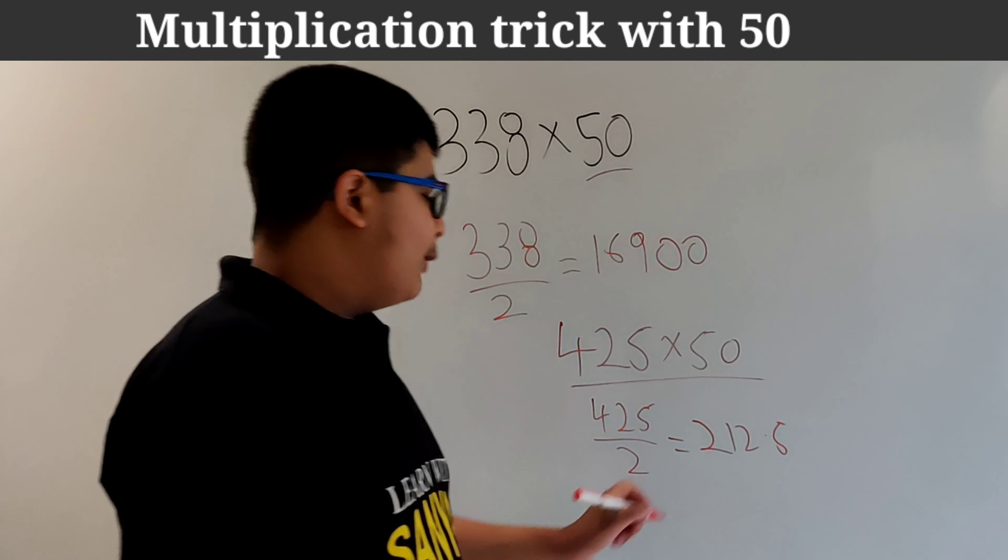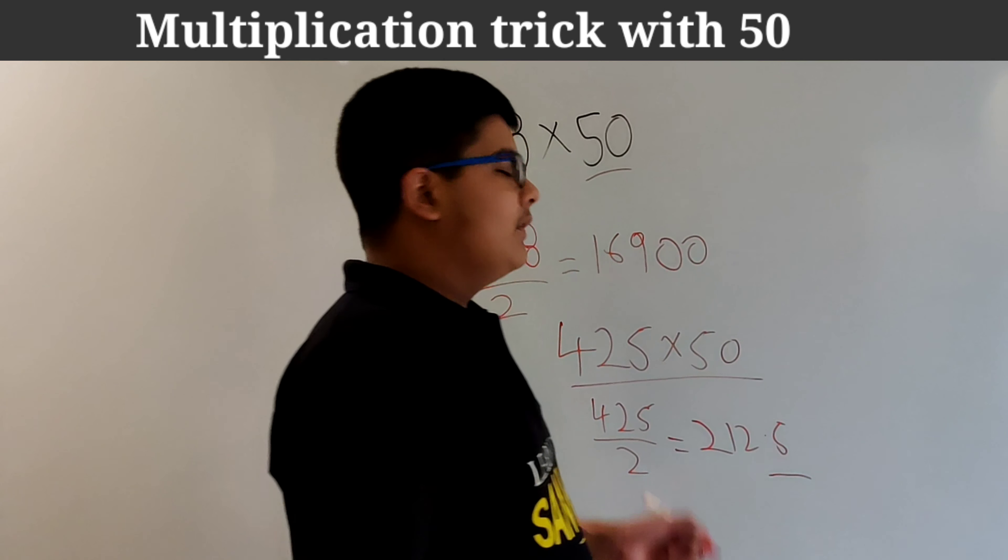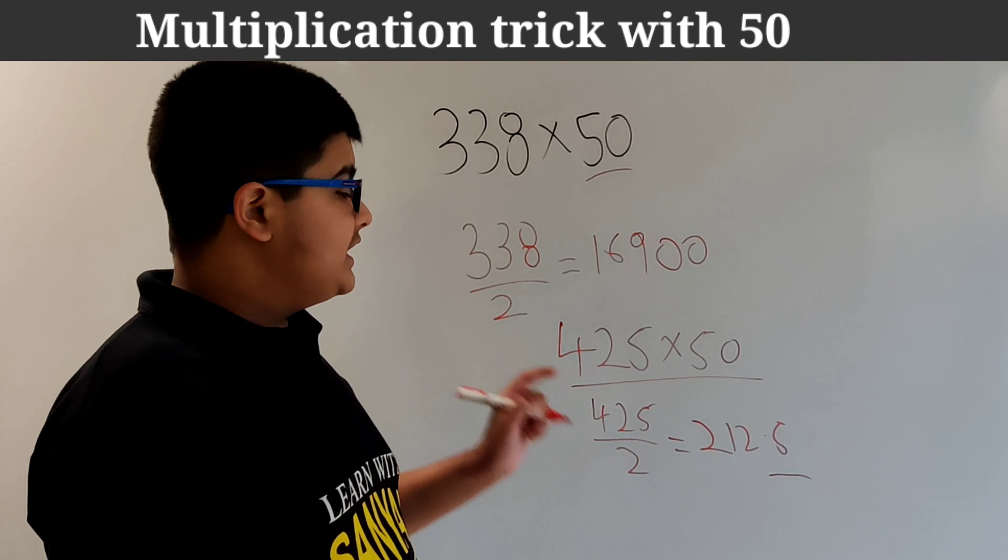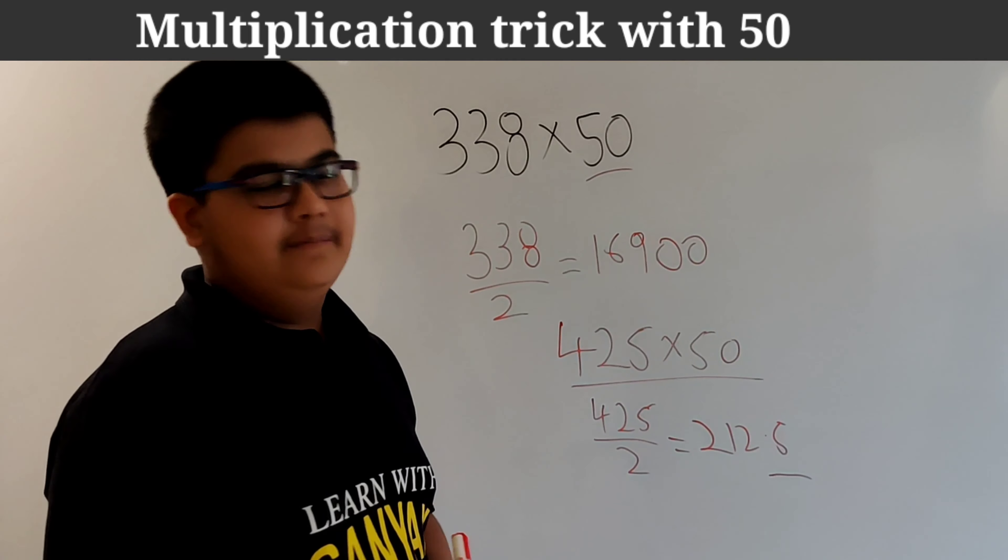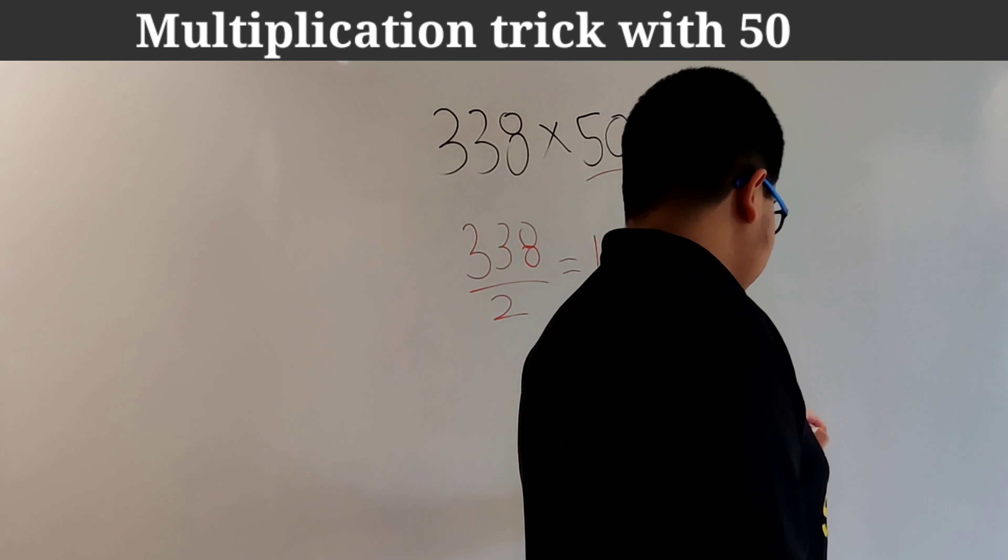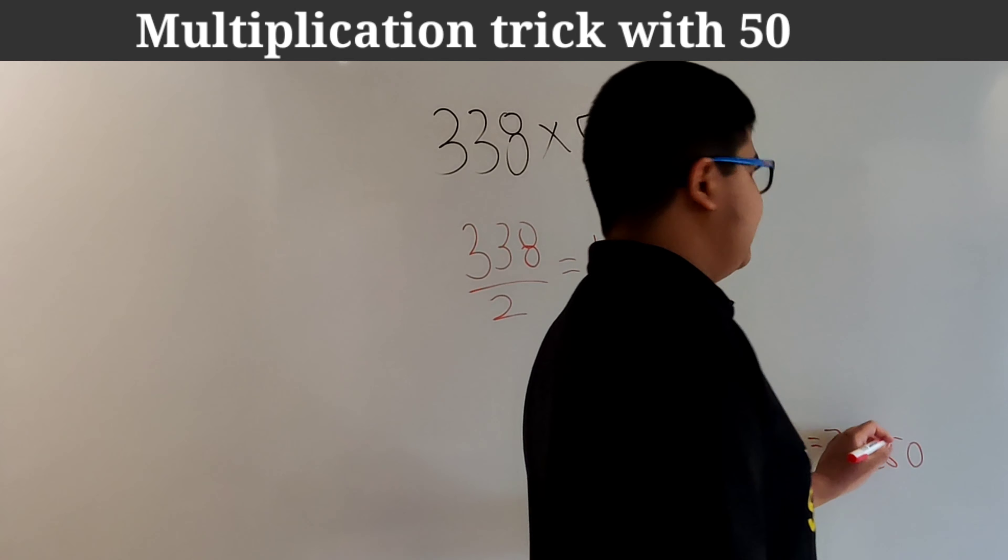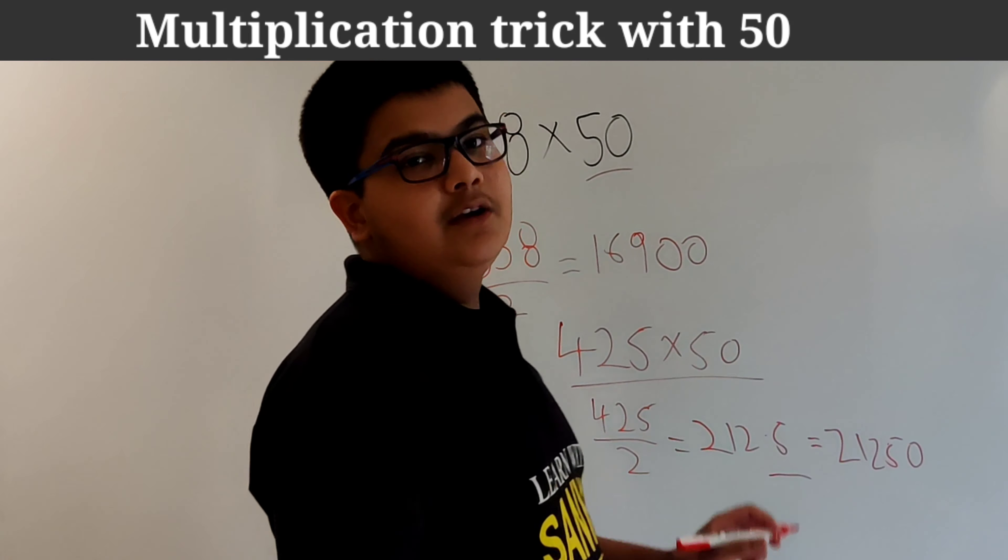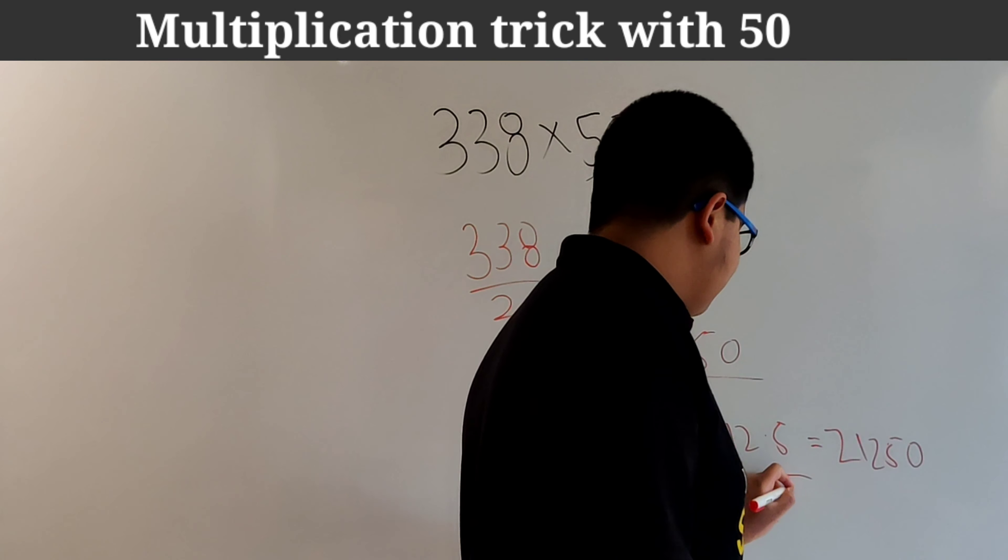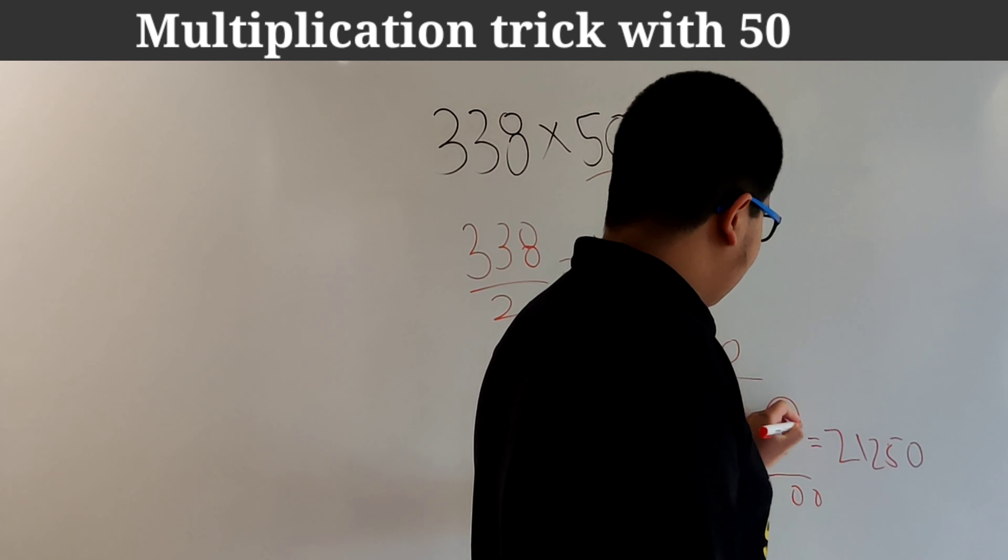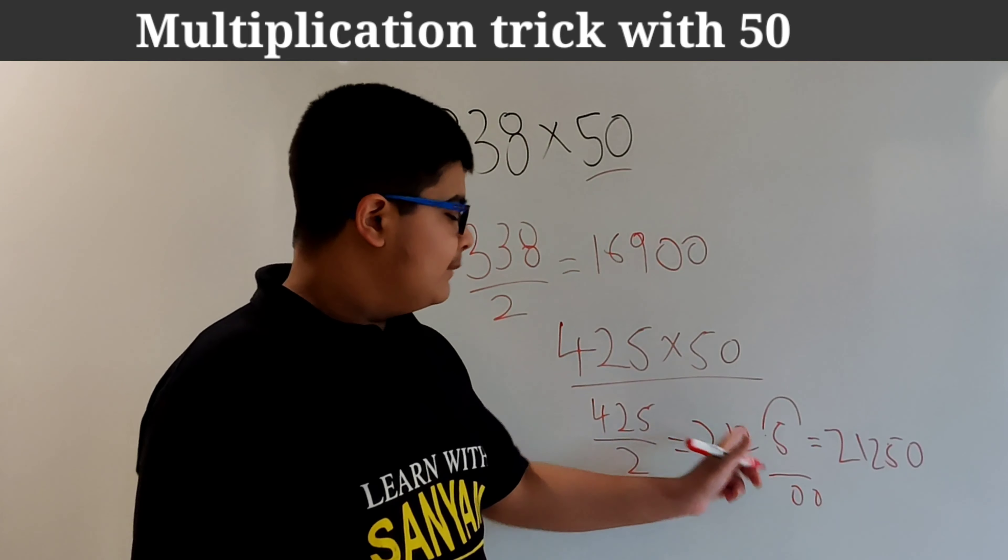So as a point has come in this question then what we will do is that we will add just a single 0 in it. So our answer will become 21250. Now this is because actually we are adding 2 zeros only. But because there is a point, that's why 1 zero will be exhausted in removing that point.